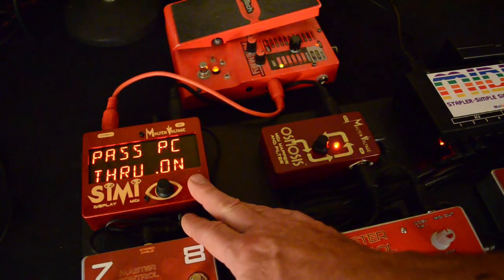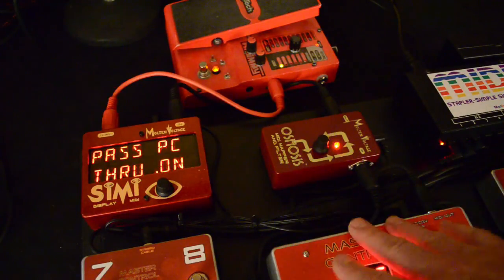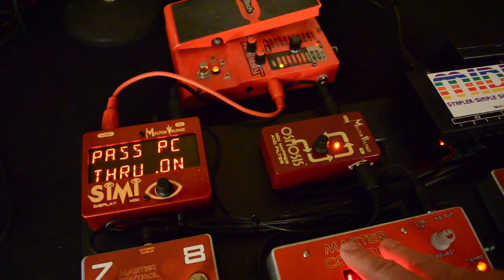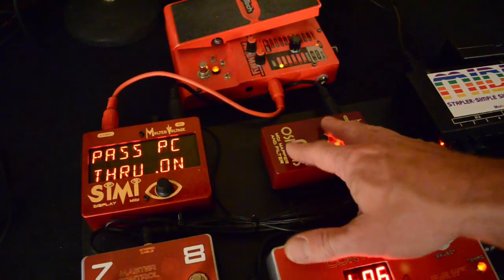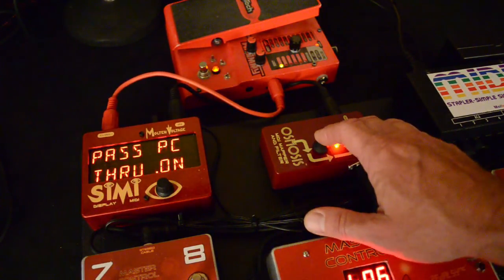Pass Program Changes Through. The default is On, and that means it'll pass through the original program change from your controller, the one that triggers the remapping. So we'll leave that one on.